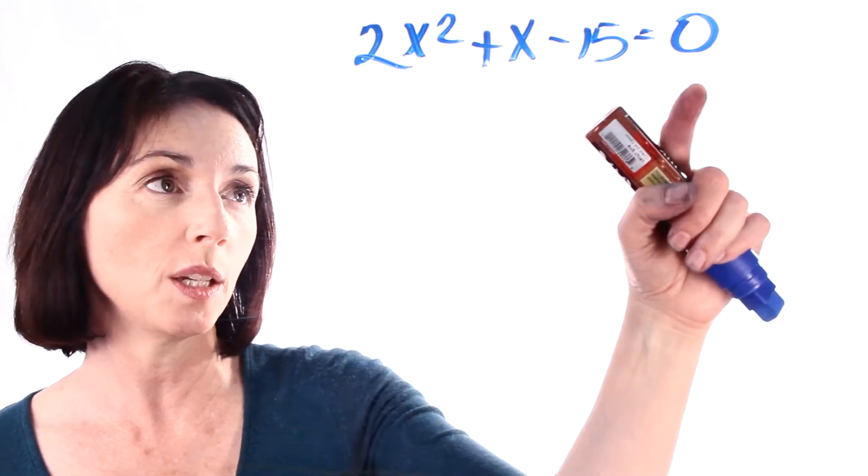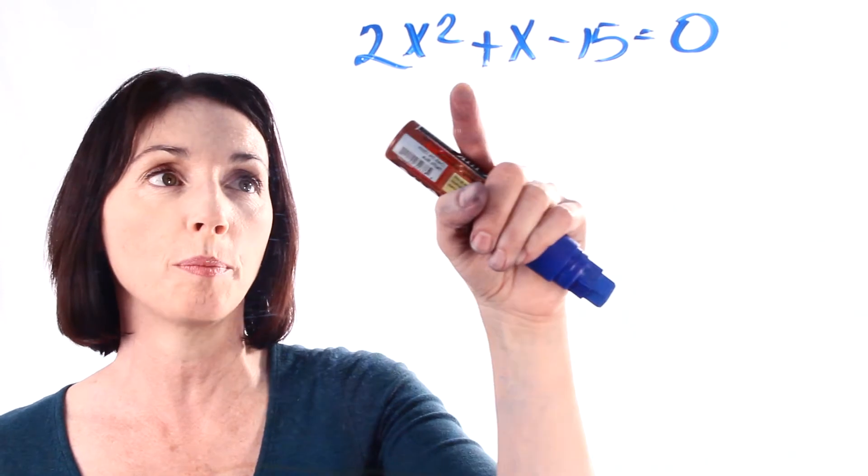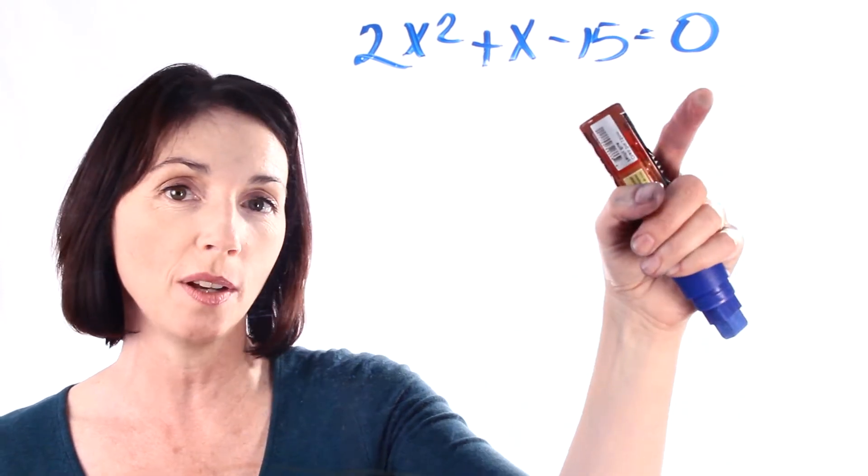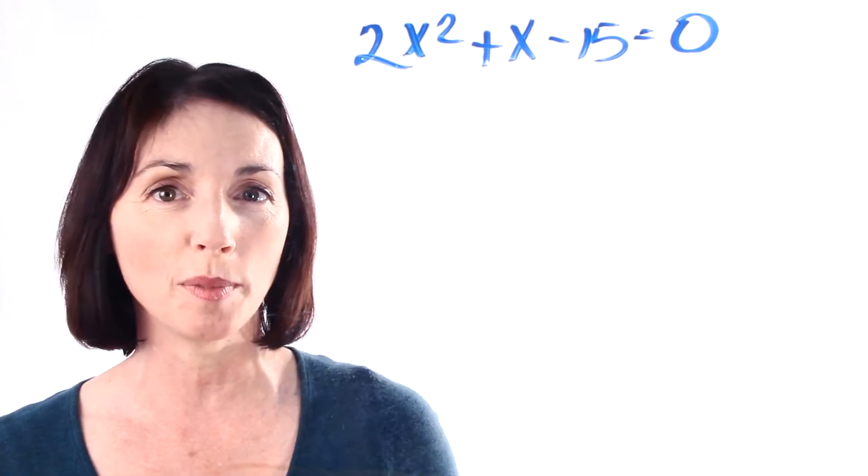So here's our quadratic equation, it's in the correct form, ax squared plus bx plus c equals zero. So we're going to go ahead and plug it into the formula and see what happens.